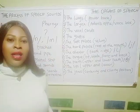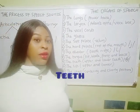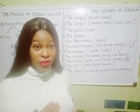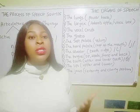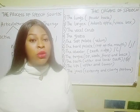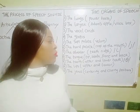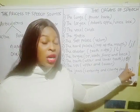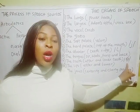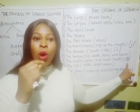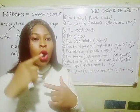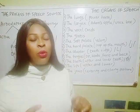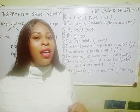The teeth is another organ of speech. We have the upper and the lower teeth. When we produce sounds using the teeth, we have the dental sounds. Now this symbol shown here is an example of a dental sound. To articulate it, we bring out the tip of the tongue and put it in between the upper and the lower teeth, then blow a little air. The sound is /θ/ as in 'thank you'.